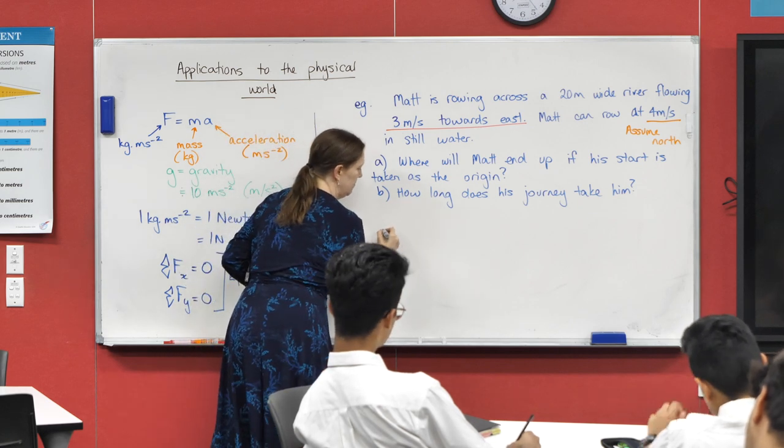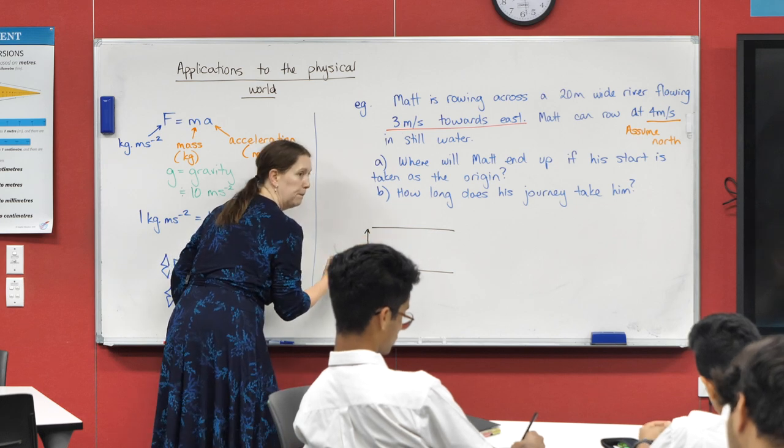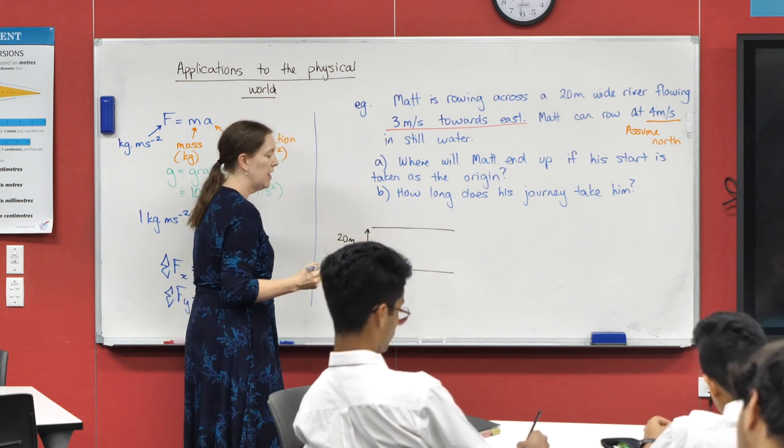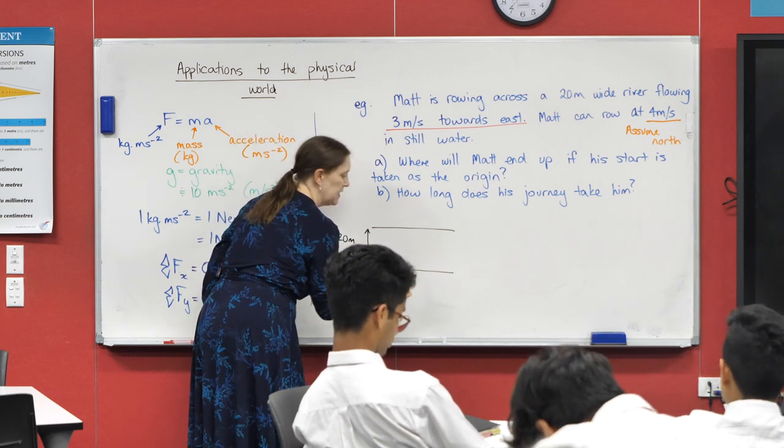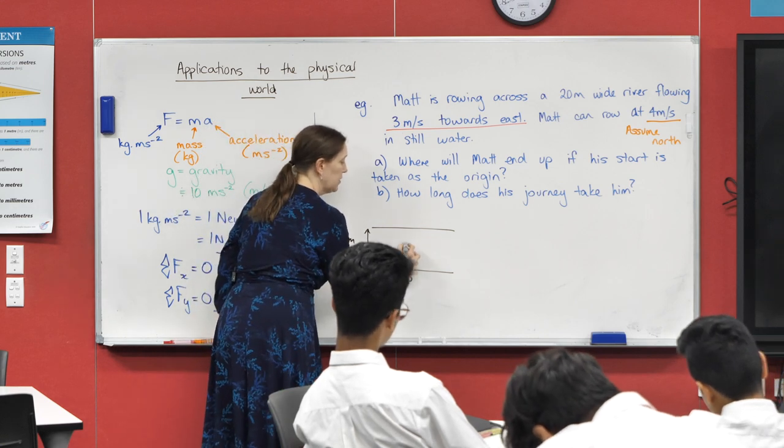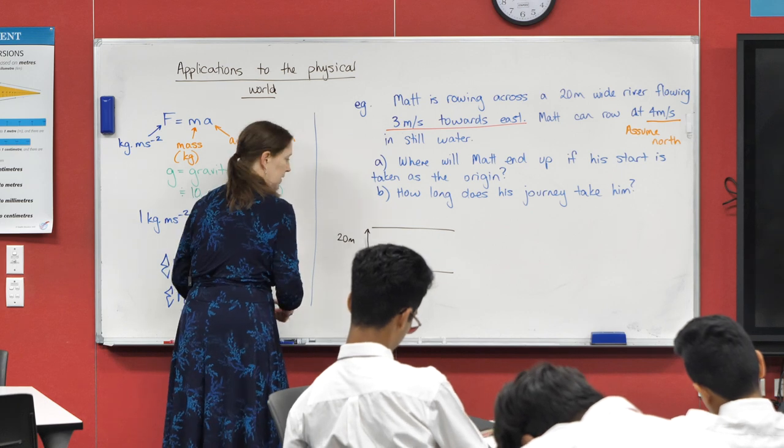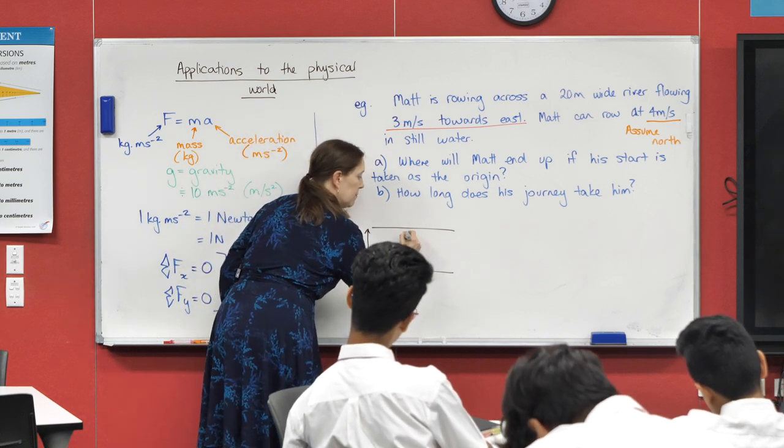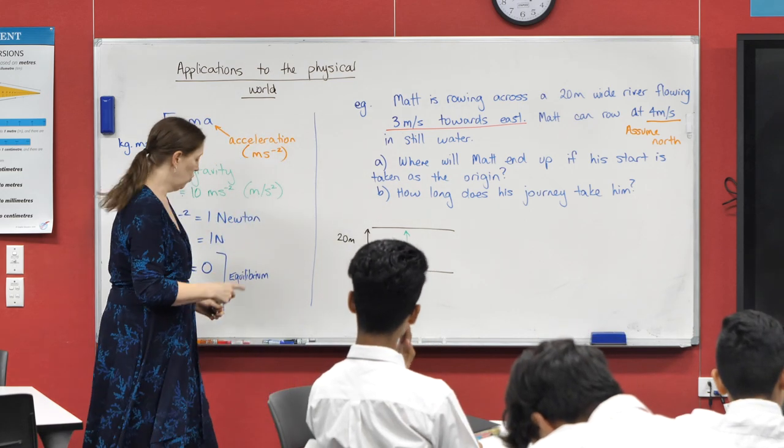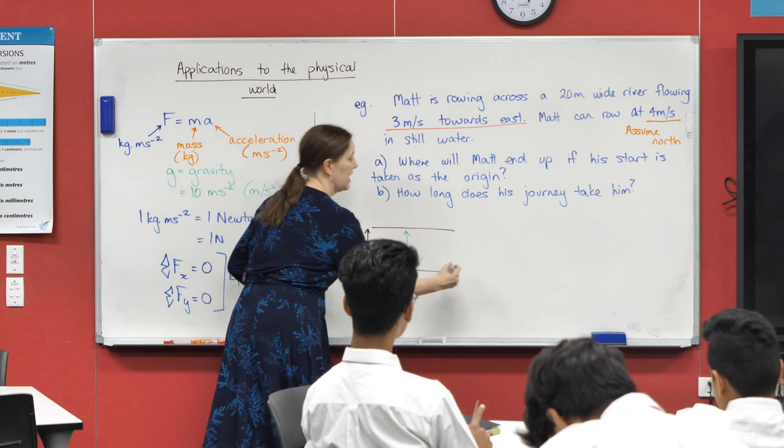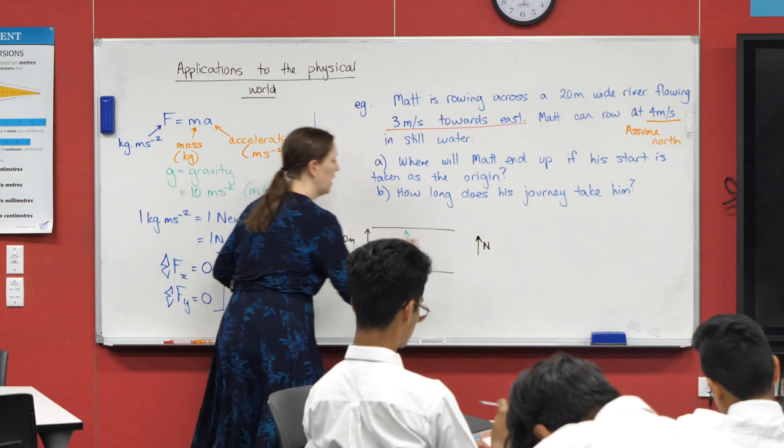And so we should probably write that we're assuming we're crossing the river north. We'll do that in our diagram, so I have a river. How wide is my river? 20 meters. I have a vector diagram. Here's Matt starting at his origin, and he has two vectors. The first vector is, I'm going to draw it in different colors, first vector is him rowing at four meters per second. I have a direction north. I haven't specified that yet so let's do that.